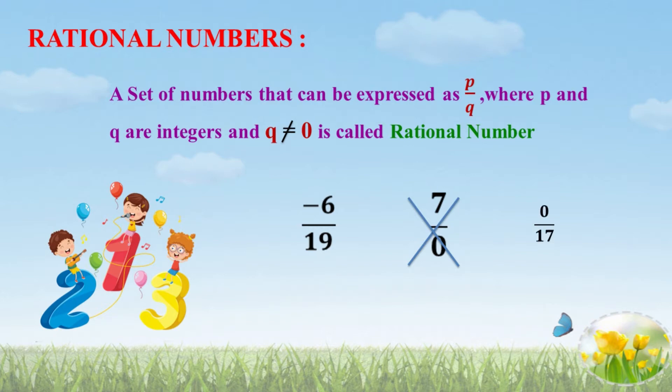Another example: 0 by 17. Is this a Rational Number? Yes, of course. Because 0 is the numerator. They did not place a condition on the numerator. Only the denominator should not be 0. Therefore, 0 by 17 is a Rational Number.